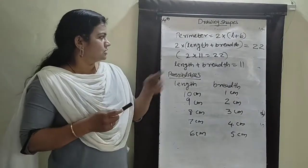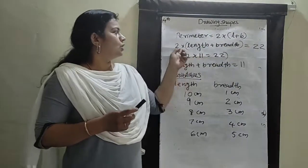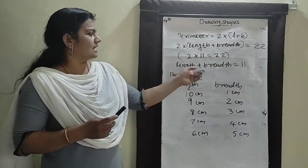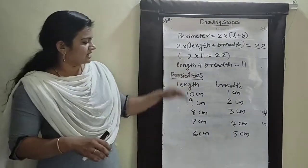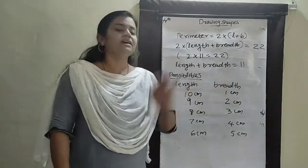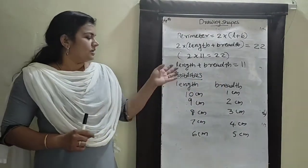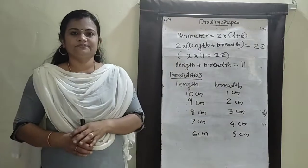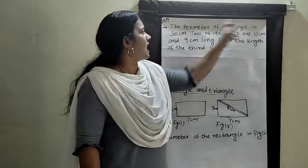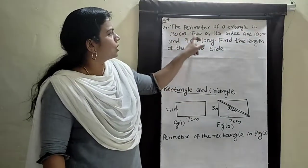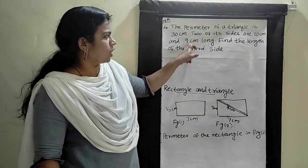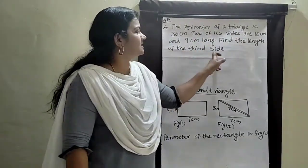So the perimeter is equal to 22. 2 into length plus breadth equals 22. We can write length plus breadth is equal to 11, and list the possibilities of length and breadth. Now discussing another problem: The perimeter of a triangle is 30 centimeters. Two of its sides are 10 centimeters and 9 centimeters long. Find the length of the third side.